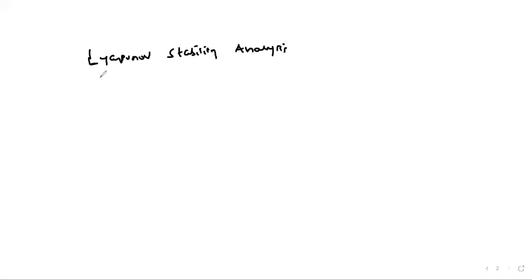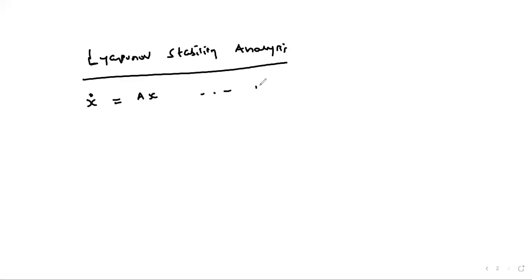For the Lyapunov stability analysis, consider a linear time-invariant system defined by ẋ = Ax — equation one. We define a Lyapunov function V(x) in quadratic form as V(x) = xᵀPx — equation two.